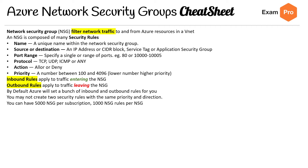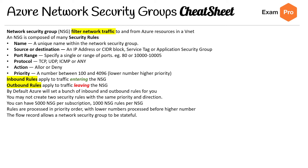That's a lot — you'd have to be a pretty big company to run out of those. Rules are processed in priority order, with lower numbers processed before higher numbers. The flow record allows a network security group to be stateful.